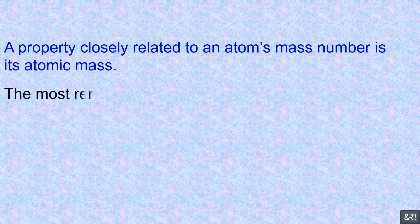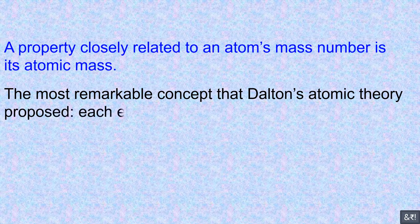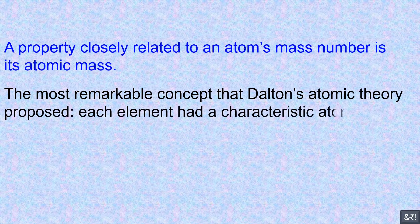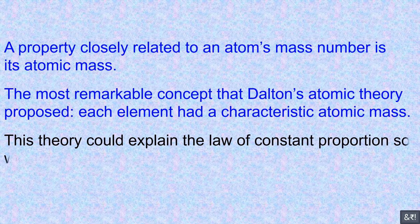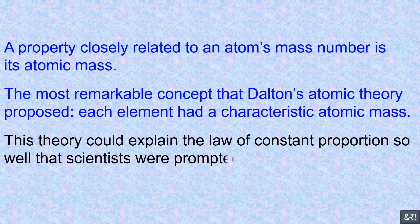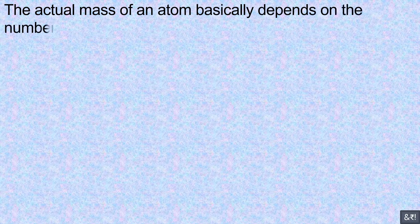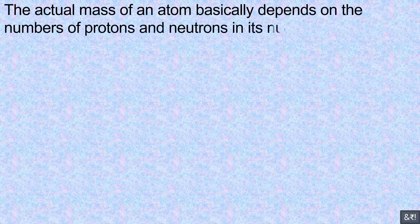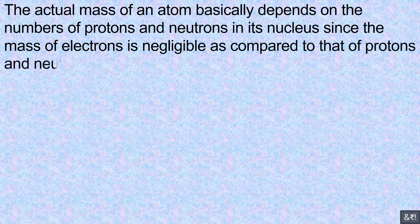A property closely related to an atom's mass number is its atomic mass. The most remarkable concept that Dalton's atomic theory proposed was that each element had a characteristic atomic mass. This theory could explain the law of constant proportion so well that scientists were prompted to measure the atomic mass of an atom. The actual mass of an atom basically depends on the numbers of protons and neutrons in its nucleus, since the mass of electrons is negligible compared to that of protons and neutrons.